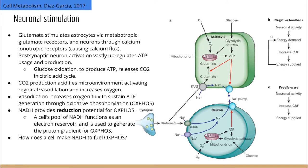Postsynaptic neuron activation vastly upregulates ATP usage and production. This primarily occurs because mounting and propagating an action potential is a very energetically expensive process, involving tons of ion transporters like sodium-potassium pumps, which actually account for 70% of the brain's total ATP use. So in order to get this tremendous amount of ATP needed to shuttle ions across the membrane, the cell begins importing and burning glucose.